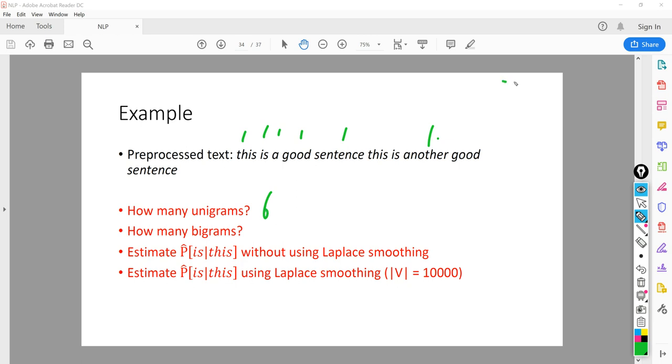How about bigrams? So unigram is just one word, and bigram is two words combined together. Since here we are going to find the bigrams, which is this is, is a, a good, good sentence. However, this is already appeared before, so we don't count this. And is another, another good, and good sentence here also appears here. So there are one, two, three, four, five, six, seven bigrams.